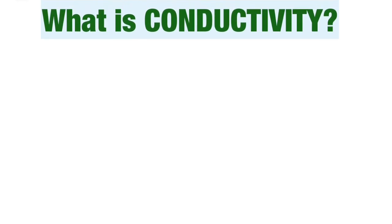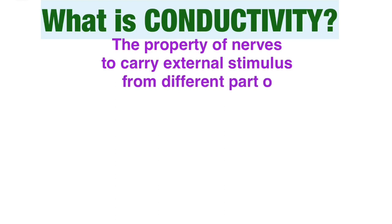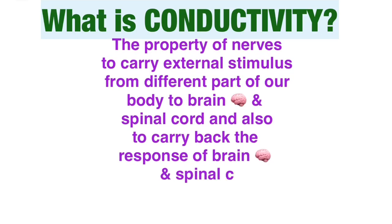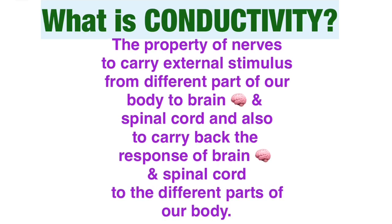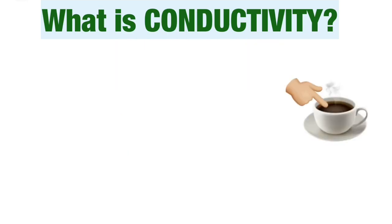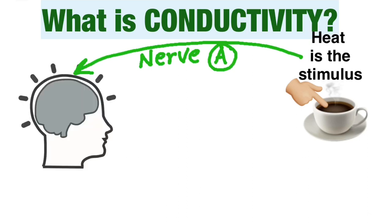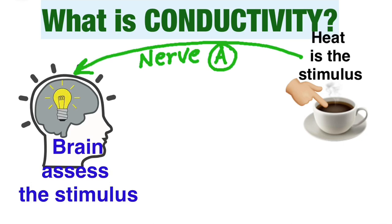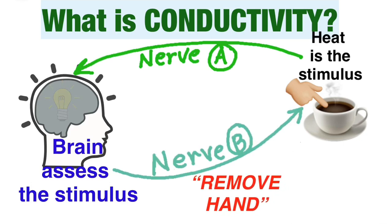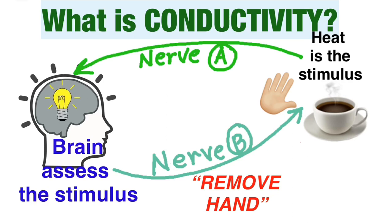Conductivity is the property of nerves which helps them transfer or carry the external stimulus from different parts of our body to the brain and spinal cord, and in return they also carry the response sent by the brain and spinal cord back to the different parts of our body. For example, the hand touches a hot object — the heat is an external stimulus. This stimulus is carried by the nerves to the brain, which assesses it and sends the response to remove the hand. This response is carried by another nerve from the brain to the hand, and the hand is removed from the hot object.